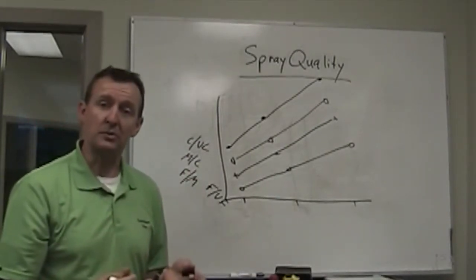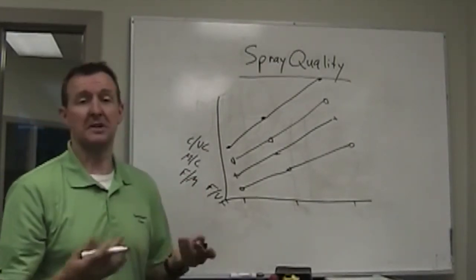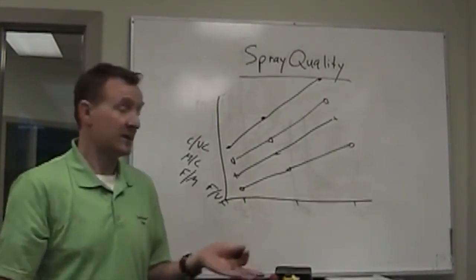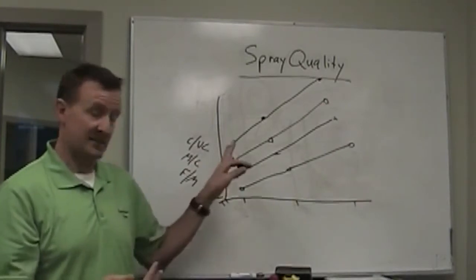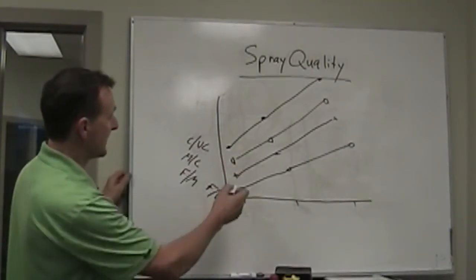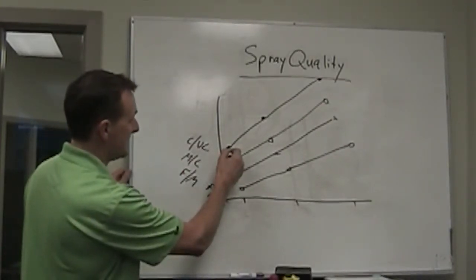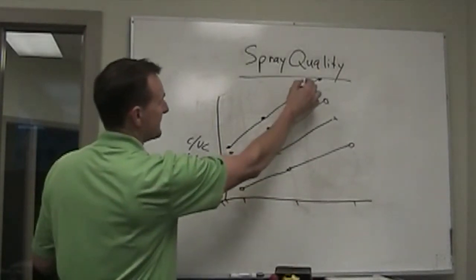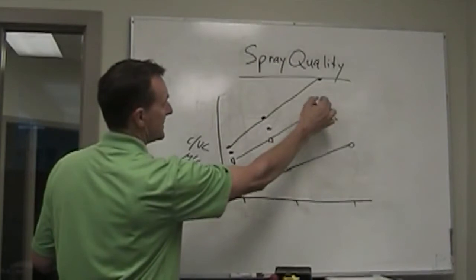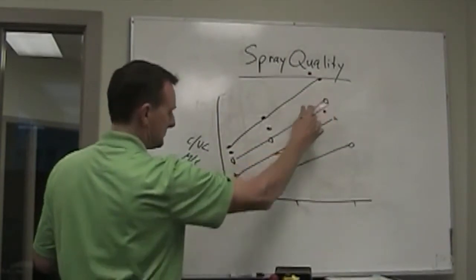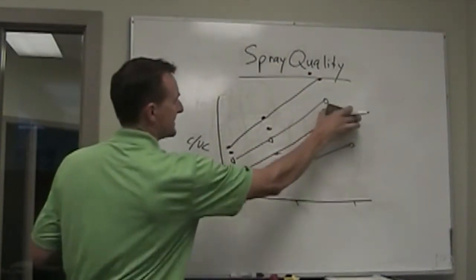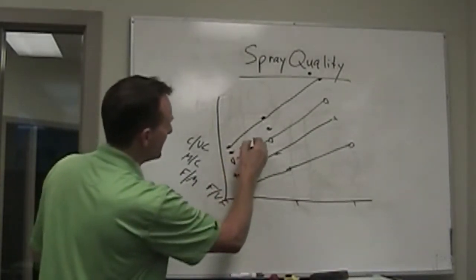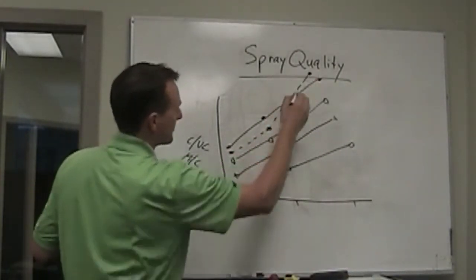Now what we do is we take the nozzle of interest. Let's say we've got an air bubble jet. Let's say we've got a Hypro Guardian Air. And we want to know, is it fine, medium, coarse? What is it? We'll spray it, same day, same conditions. And we'll find something like this. We'll say, aha, it's got a data point here and here. And let's just draw it, combine these points here.